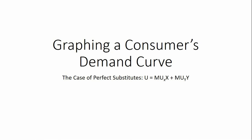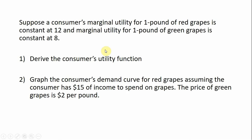In this video we're going to look at graphing a consumer's demand curve when the consumer has a utility function given by perfect substitutes. Suppose a consumer's marginal utility for one pound of red grapes is constant at 12, and marginal utility for one pound of green grapes is constant at 8. We'll derive the consumer's utility function, and then graph the consumer's demand curve for red grapes, assuming the consumer has $15 of income to spend on grapes, and the price of green grapes is $2 per pound.